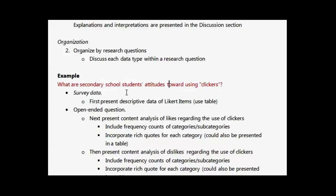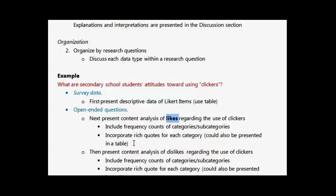Within those headings, I put in the type of data and results that address the research question. In this case, I collected survey data and had two open-ended questions. In the survey data, I might present descriptive data of the Likert scale items — means and standard deviations. In the next part of the subsection, I might present a content analysis of the Likes regarding the use of clickers. I might include frequency counts of categories — for example, 9 out of 50 students said they thought clickers were fun. Then I would put in a rich quote or two describing that, just so the reader knows what I mean. I would go through my content analysis and key categories and present them here.